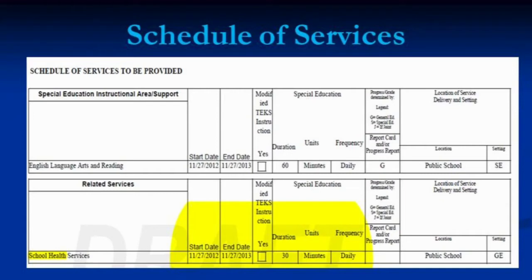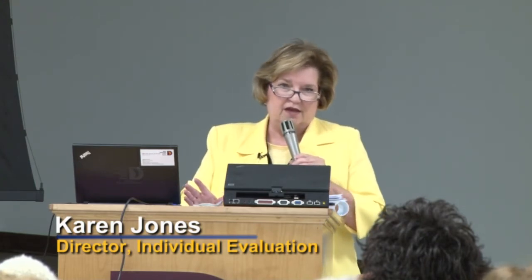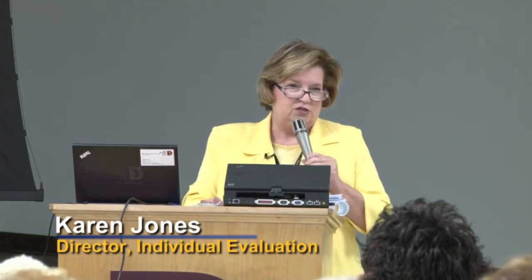In this example, a child will be getting 30 minutes a day and the location is the public school setting. If it's something done only in a specific location, that would be a special education setting. That time is factored into how many minutes a day the student gets for special education services, deriving what's called the instructional arrangement code, which is sent to PEIMS. Certain instructional arrangement codes get funded at a certain level and others at another level — so it's very important that all things be entered correctly.